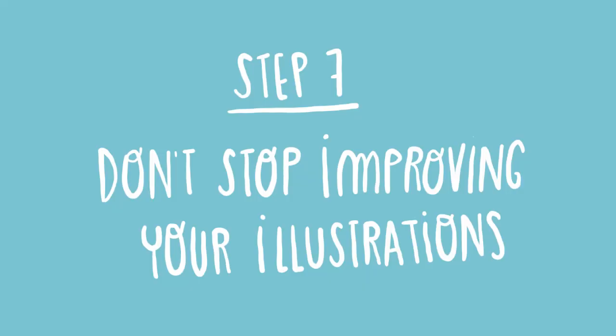The final point, number seven, is to never stop developing your own illustration style. A lot of illustrators, when they reach a certain point in their careers, stop developing their style. Since you're just starting, it's very good to always be developing it. The only way to improve or develop your style is to be critical and take feedback from viewers on your blog. It's amazing to see the curve of improvement over months and years.